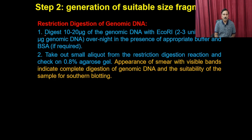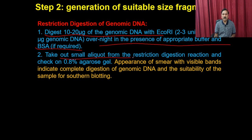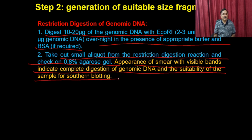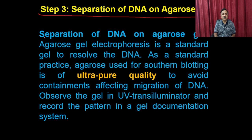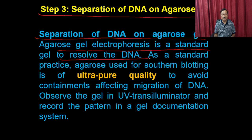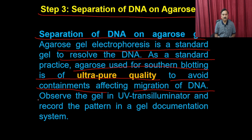The protocol involves digesting 20 micrograms of DNA with EcoRI overnight in the presence of appropriate buffer and BSA. A small aliquot from the restriction digestion reaction is checked on agarose gel — appearance of a smear with visible bands indicates complete digestion of genomic DNA and suitability for Southern blotting. Step 3 is separation of DNA on agarose gel using ultra-pure quality agarose to avoid contaminations affecting DNA migration. Observe the gel in a UV transilluminator and record the pattern in a gel documentation system.